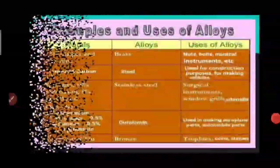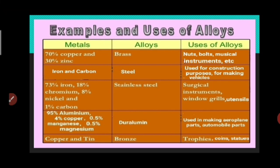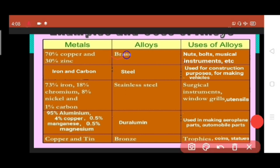Next is alloys and some examples of it. First one is brass. It is made up of 70% copper and 30% zinc and is used for making nuts, bolts, musical instruments, etc. Second is steel. It is made up of iron and carbon and is used for construction purposes, for making vehicles.